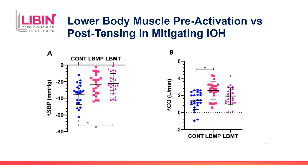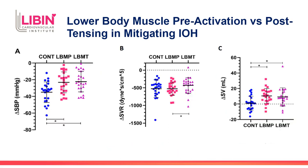We found that the large drop in systolic blood pressure typically seen upon standing in IOH is reduced following both LBMP — lower body muscle preactivation — as well as LBMT — muscle tensing after standing. Focusing on LBMP, we found this reduction was due to an increase in cardiac output. For lower body muscle tensing, the reduction in systolic blood pressure drop was due to a reduced drop in systemic vascular resistance as well as an increase in stroke volume. In addition, both interventions — LBMP through knee raises and LBMT after standing by leg crossing — both reduced pre-syncope symptoms upon standing.